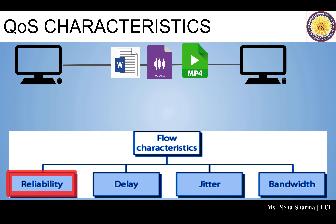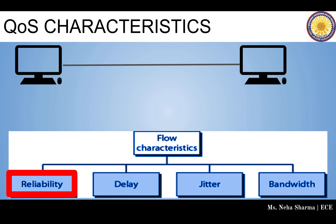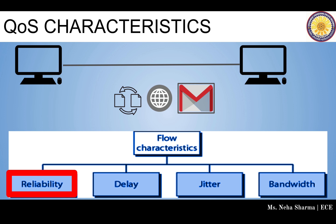The first characteristic is reliability. The lack of reliability means that packets are lost or an acknowledgement has been lost and it requires retransmission. File transfer, internet access, and email services are very important data that cannot be lost. These are much higher priority than video conferencing. So these applications have to be much more reliable.